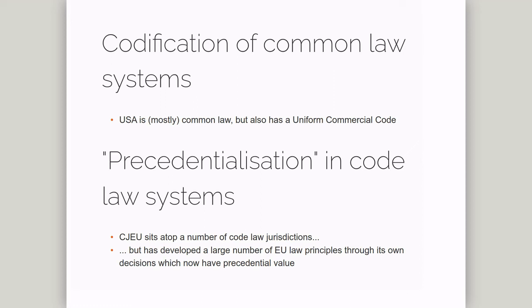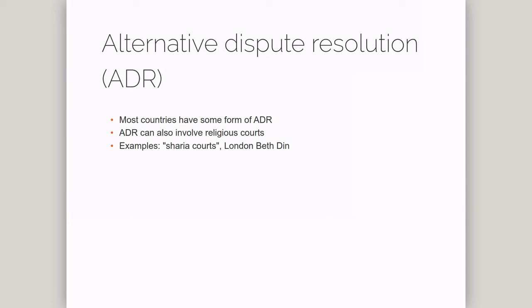Fourth, most countries have some dispute resolution systems that work like courts but which may rely on very different principles. For example, sometimes newspapers in the United Kingdom talk about Sharia courts. There aren't any binding Sharia courts in the UK, but some Muslims are happy to accept the jurisdiction of Sharia-based family courts. Similar arrangements apply to the Jewish community, where the London Beth Din plays an important role. These courts rely on the consent of the individuals involved and often work with family disputes, but mediation and arbitration systems are found in most countries. For predictable reasons, religious courts tend to attract more attention than these other forms of dispute resolution.